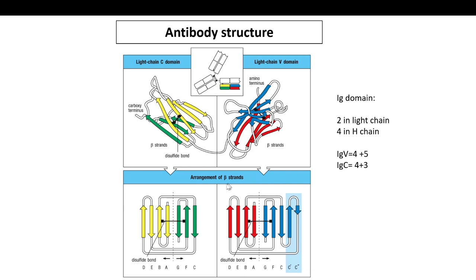In the Ig superfamily there will be two sheets — a front sheet and a back sheet. In the IgV domain, the front sheet and back sheet are connected by a disulfide bond between the B and F strands. This disulfide bond is necessary for maintaining the structural integrity of the beta-sandwich topology. The IgC domain differs from IgV in that it lacks two strands — the C-prime and C-double-prime strands — which are present in the IgV domain.